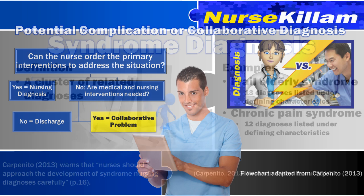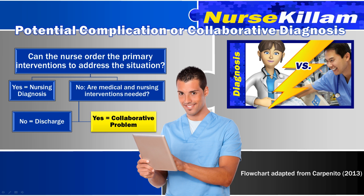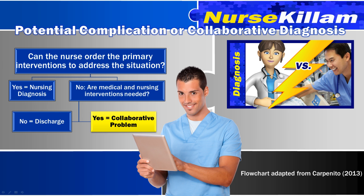I have listed the potential complication or collaborative diagnosis in this video because a lot of students seem to think it is a type of nursing diagnosis, and they are discussed in some handbooks. However, this diagnosis type does not follow the PES format, and for good reason — it actually isn't a nursing diagnosis. Carpinito identifies that a collaborative problem is a situation whereby the nurse cannot legally order the primary interventions to achieve the client's goal, but medical and nursing interventions are needed to achieve it. With a collaborative problem, the nurse's focus is to reduce the severity of the problem. When writing collaborative problem diagnostic statements, the label 'risk for complications of' is always used. For more information, please watch my video about medical versus nursing diagnoses and collaborative problems.